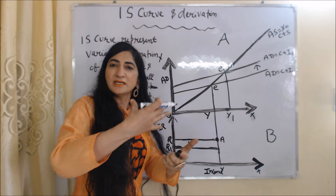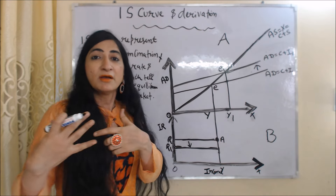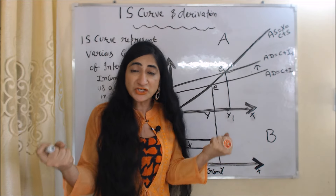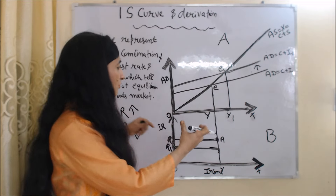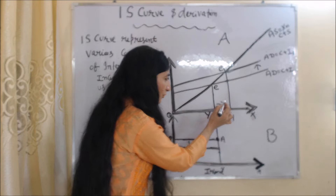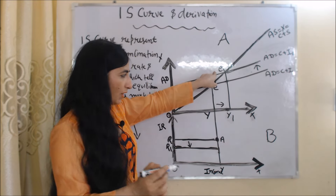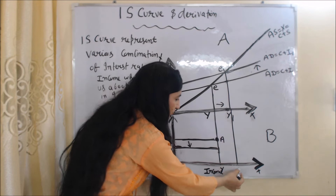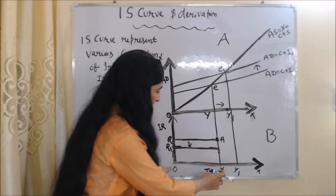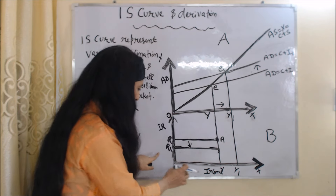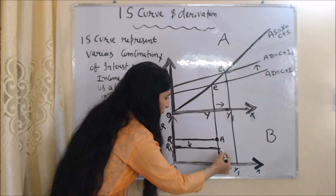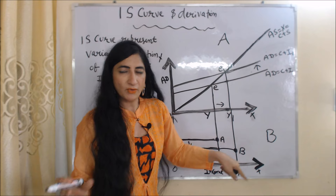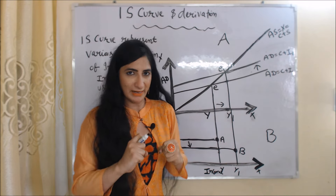Why does investment increase cause income to also increase? Because when investment increases, output increases and employment increases — as a result, national income increases. So our income increases from OY to OY1 and our new equilibrium point is E1. We extend this income line into the second diagram. At equilibrium point E1, our income is OY1 and interest rate is OR1. Joining these values gives us new point B, which tells us about equilibrium in the goods market.